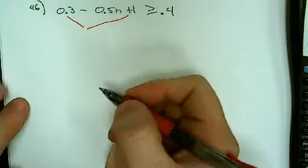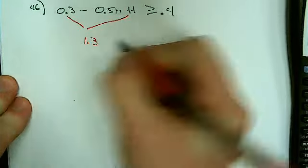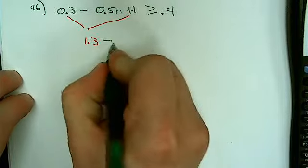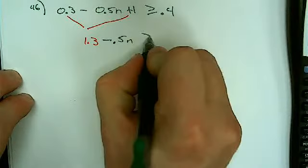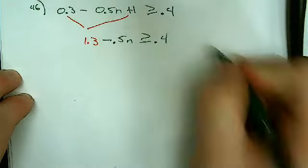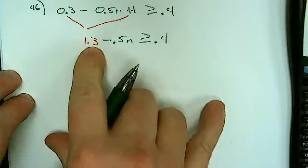Guys, so I have 1.3, and that gives me minus 0.5n, greater than or equal to 0.4. Now what?